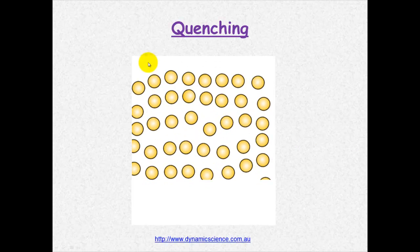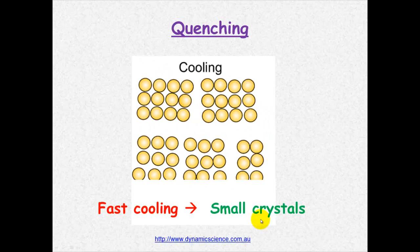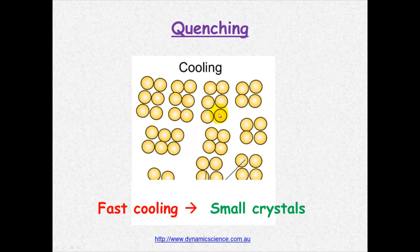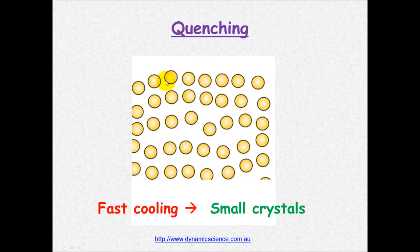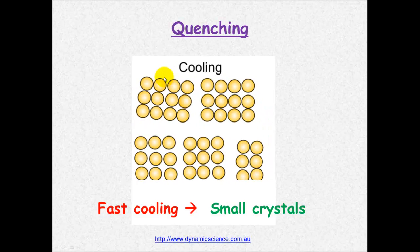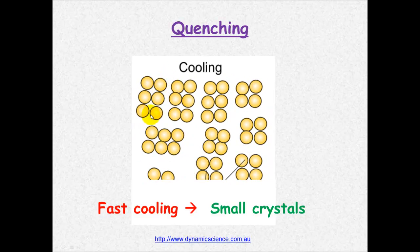When we cool it quickly, we will have small crystals forming. Here again, we are heating the metal. The cations move apart from each other. Cooling it quickly gets these smaller crystals forming.